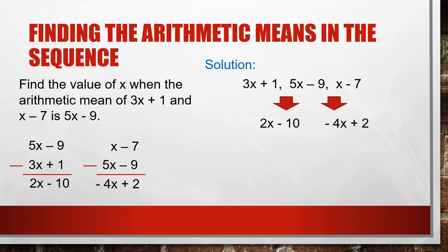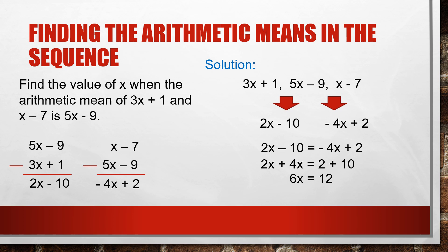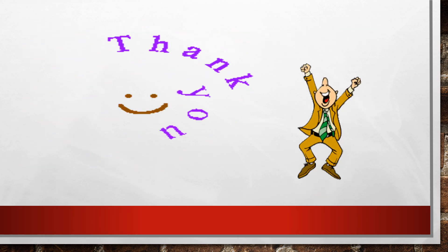We equate the two expressions: 2x − 10 equals negative 4x + 2. Adding 4x and 10 to both sides: 2x + 4x equals 2 + 10, so 6x equals 12. Dividing both sides by 6, the value of x equals 2. Very easy! Thank you for listening and have a good day.